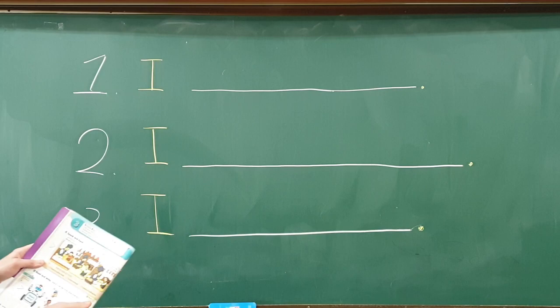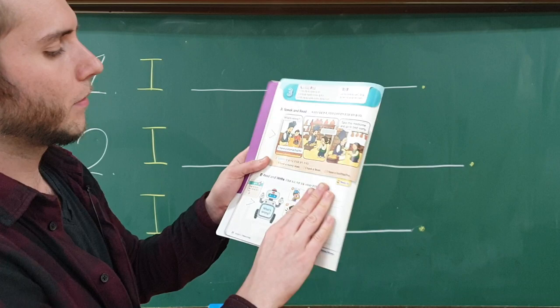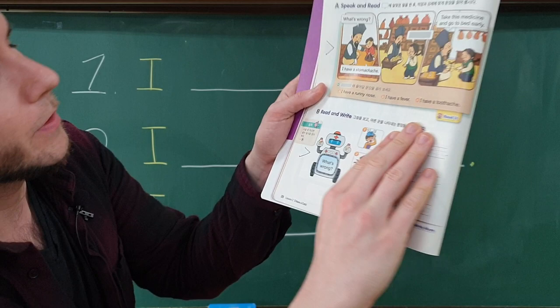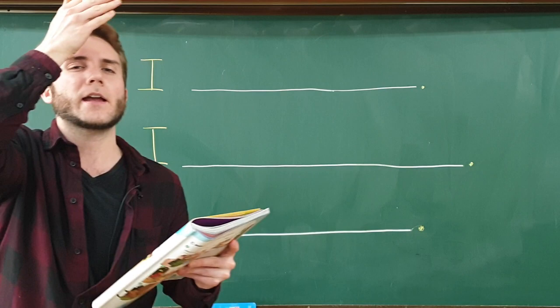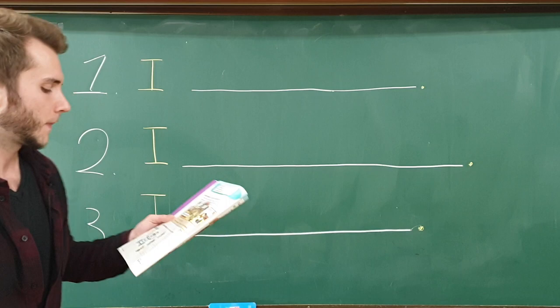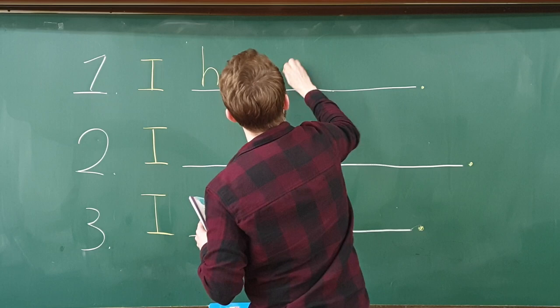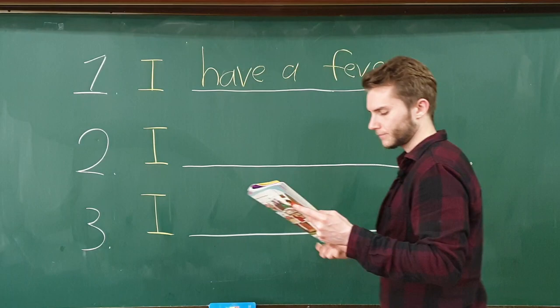I have the numbers for each picture and some blank spaces. Let's take a look at number one. What is wrong with that student? They have an ice pack on their head, so they look too hot. This one is: 'I have a fever.'